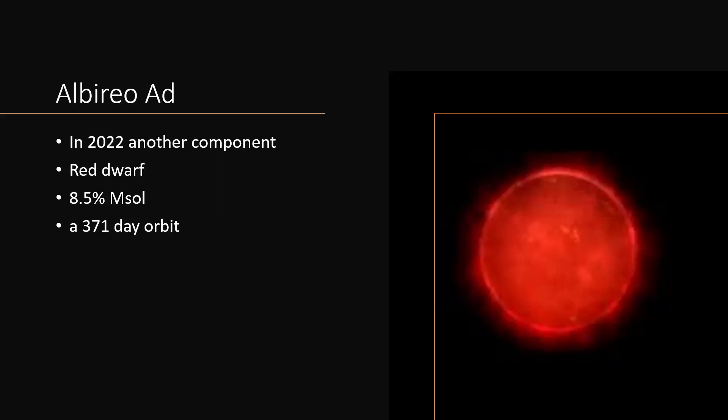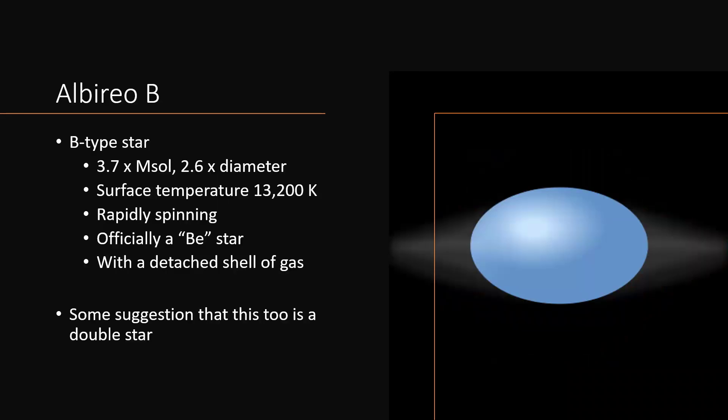Now, if we look at Albireo B, the one we can easily see, the blue one, this is also quite a big star, 3.7 times the mass of the sun, 2.6 times the diameter and very hot, 13,200 Kelvin on the surface and spinning very rapidly.